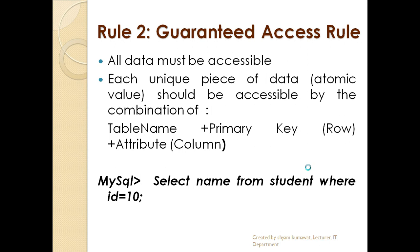When you create a table and use an insert command, any piece of data should be accessible in the DBMS. It can be accessed by providing the table name, primary key, and attributes in combination. For example: SELECT name FROM student WHERE id = 10. Here, student is the table name, id=10 is the primary key, and name is the attribute. This is all about the Guaranteed Access Rule.